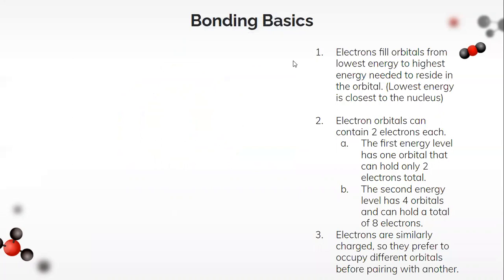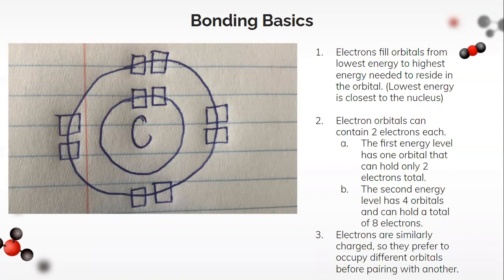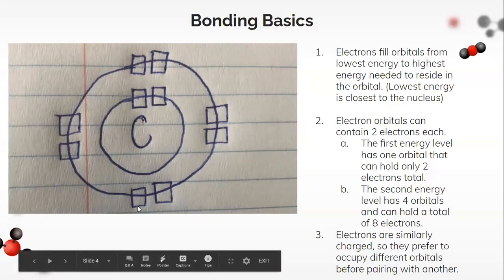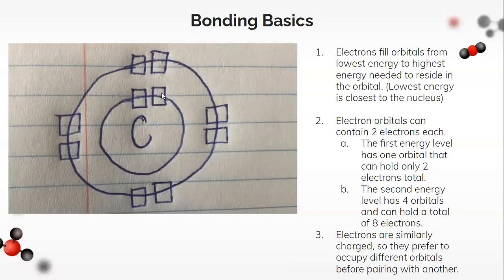Let's go through some rules for bonding basics. First, electrons fill orbitals from the lowest energy to the highest energy — they don't want to spend extra energy if they don't have to; they start filling closest to the nucleus where it takes less energy. The second rule is that electron orbitals can contain two electrons each. These electron pairs make up a single orbital. In the first energy level, we have one orbital holding two electrons. The second energy level has four different orbitals, for a total of eight electrons.